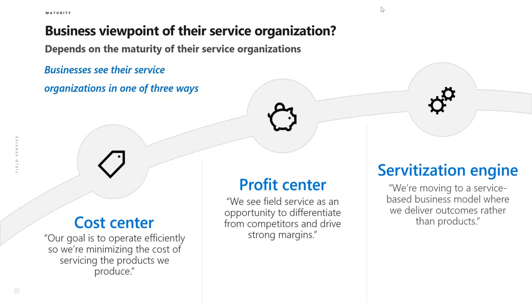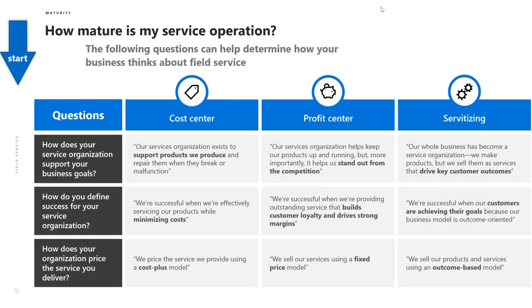How do businesses view their service organization? It really depends upon the maturity of their service organization. They are viewed in one of three ways: either a cost center, a profit center, or a servitization engine. A cost center — those companies' goal is to operate efficiently so that they minimize the cost of servicing the products that they produce. A profit center viewpoint — they view field service as an opportunity to differentiate from competitors and drive strong margins. A servitization engine — they're moving to a service-based business model where they deliver outcomes rather than products.